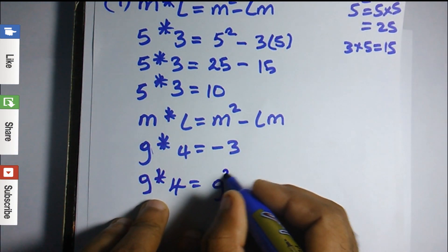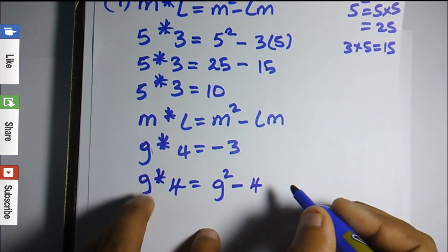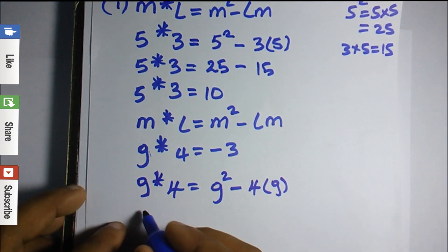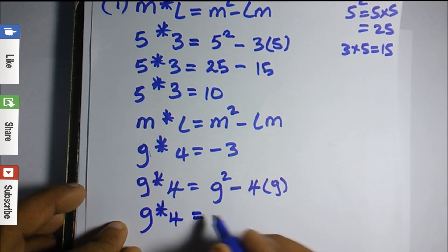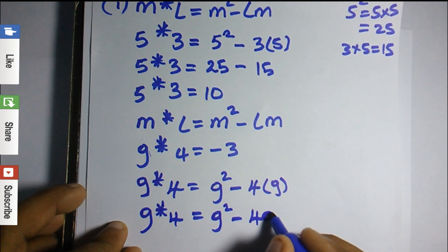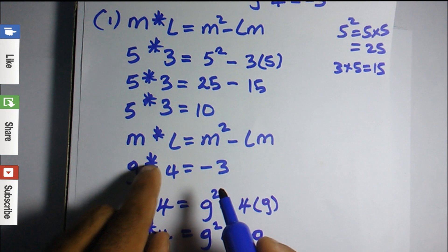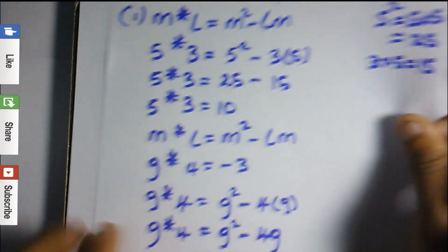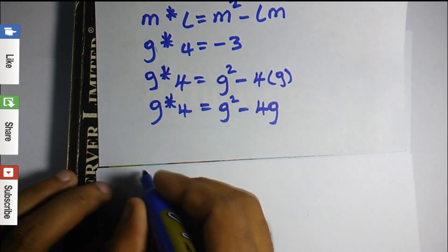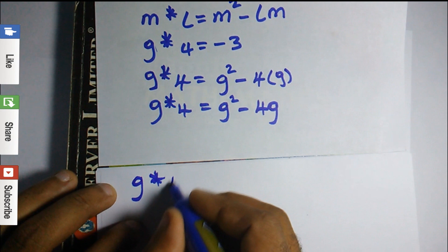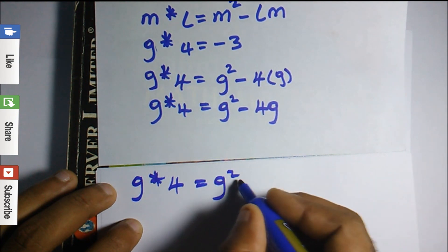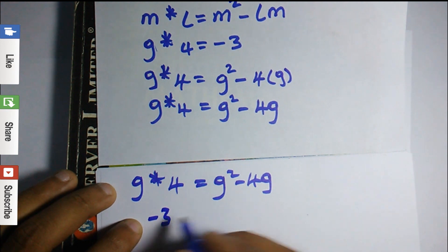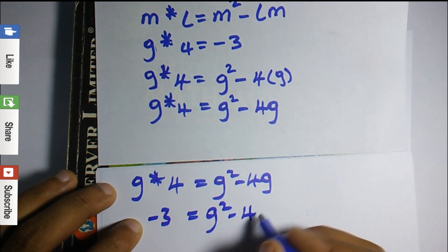Wherever we say m we substitute g, and where we say l we substitute 4. So we get g squared minus 4 times g, meaning g★4 is equal to g squared minus 4g. But remember, we were told that g★4 equals negative three, so wherever we say g★4 we can replace it with negative three.